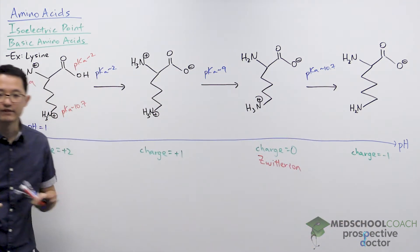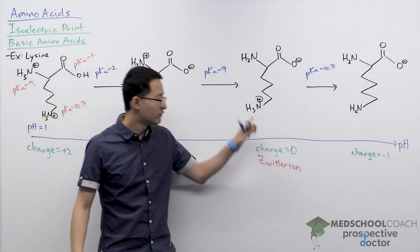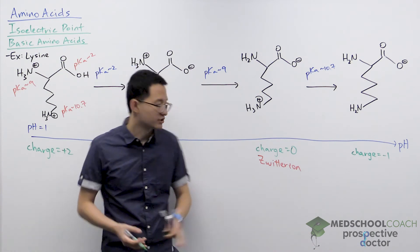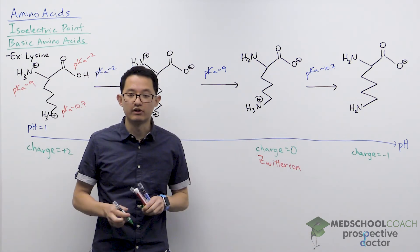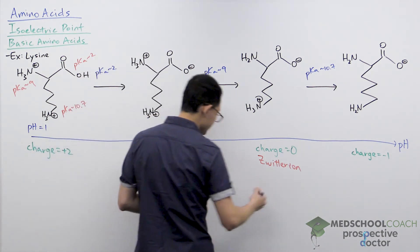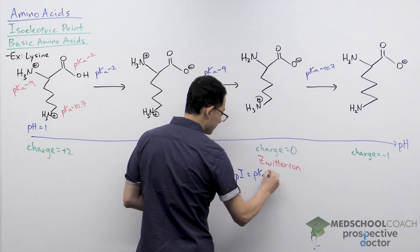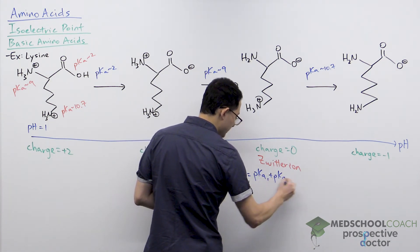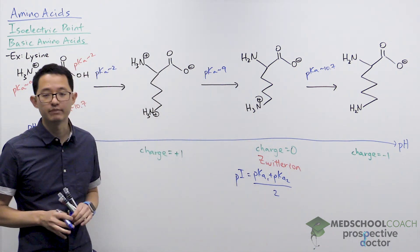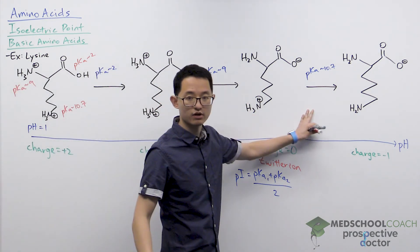Now that we've identified our zwitterion as this third molecule, we want to calculate the pI, the pH at which the molecules in solution are all in this zwitterion form. As we discussed in the previous video, the equation to calculate the pI is pKa1 plus pKa2 divided by 2. But here we have to be careful because we have three different pKa's to work with.